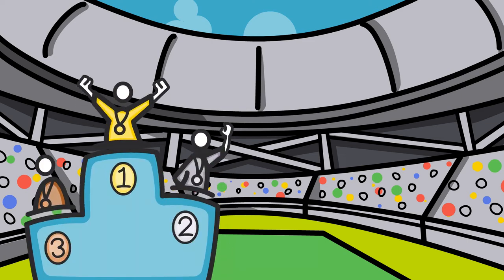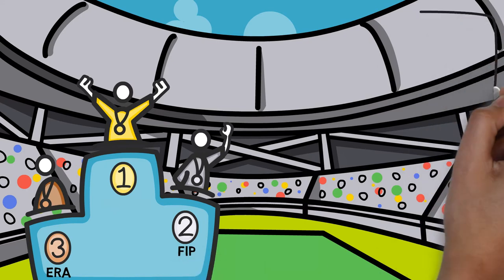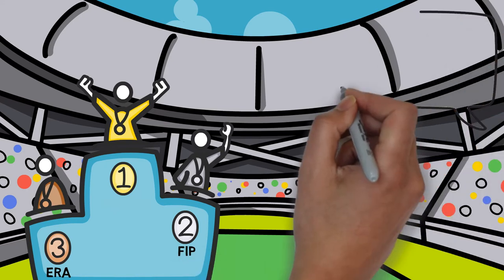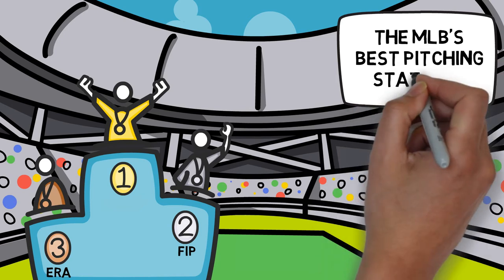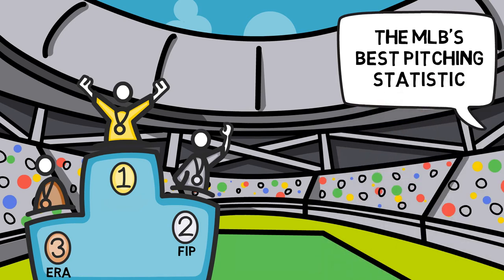In previous videos we've talked a ton about what the best stats are out there to properly analyze a pitcher's performance. I actually claimed that FIP, an advanced metric similar to ERA, was the MLB's best stat that you can turn to when analyzing pitchers. But there's actually another stat that takes home that prize, called Sierra.